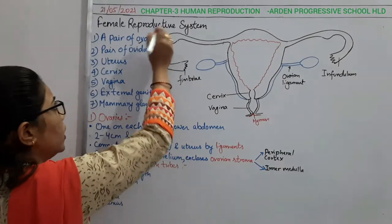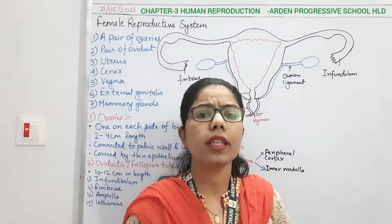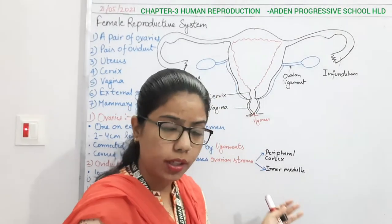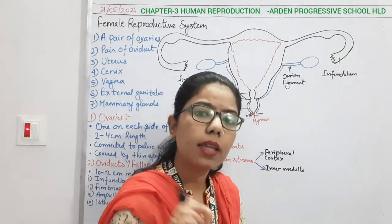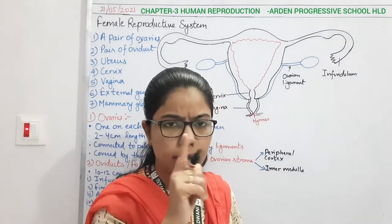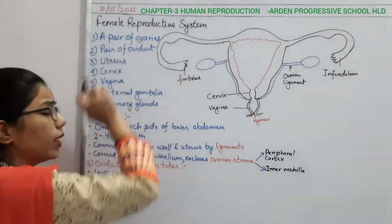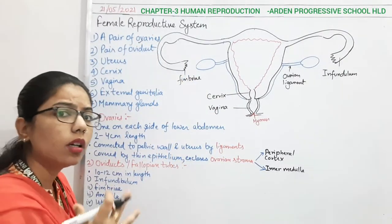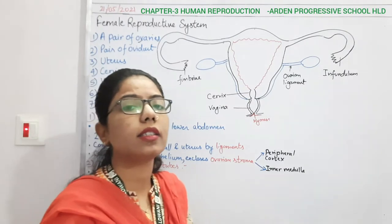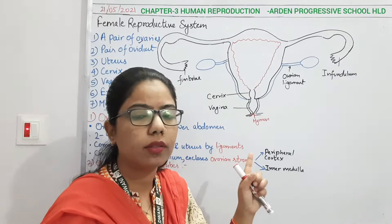If I talk about the ovaries, they are the primary sexual organ. Why? Because they give rise to the female gamete — same as in the male, where the testis was the primary characteristic. The ovaries are going to form the ovum. The other parts — oviduct, uterus, cervix, vagina — are the accessory organs, similar to what we have done in the male reproductive system.